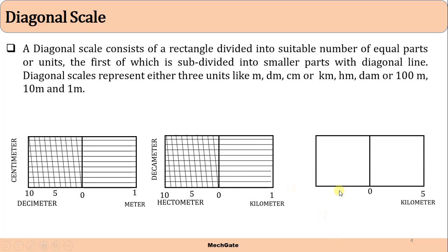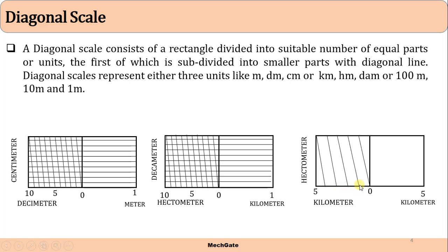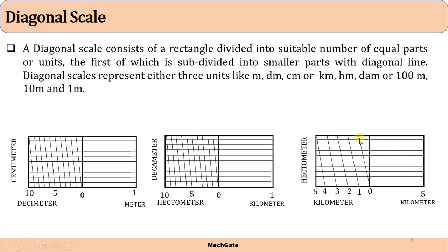For example, if the first division is 5 kilometers, we divide it into 5 equal parts to get one kilometer. One kilometer is further divided into 10 parts using horizontal lines, giving us 10 hectometers per kilometer. In this way we can divide one kilometer into 10 equal parts to get that minute distance.